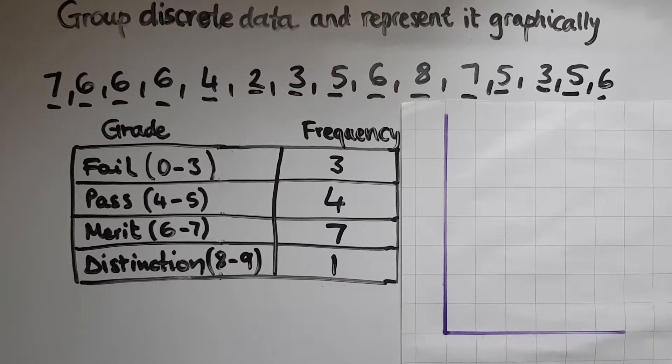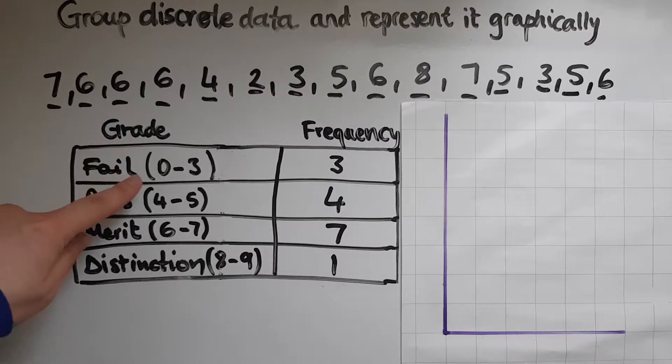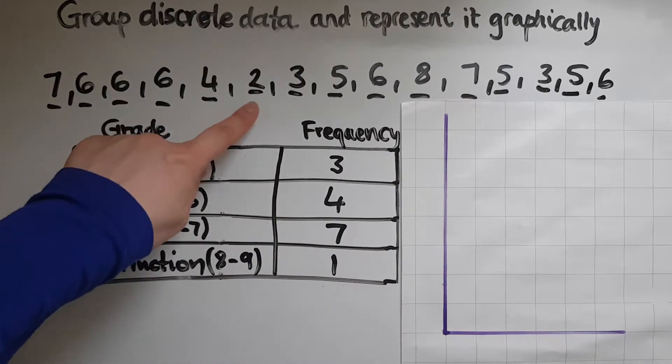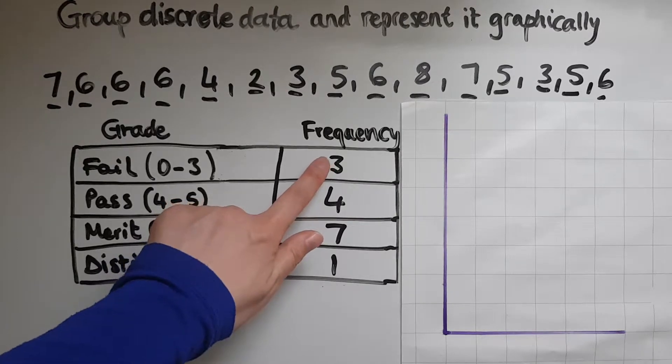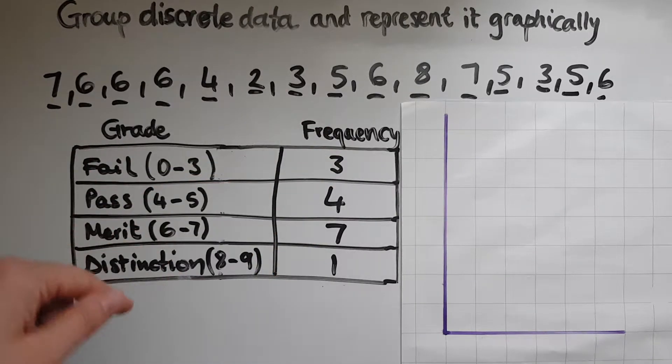So I have looked at how many learners got between 0 and 3. So 0, 1, 2 or 3. And there's one here, 2 and another one there. So 3 in total. So that's why I put 3. So frequency means how many of them or how often this is appearing.